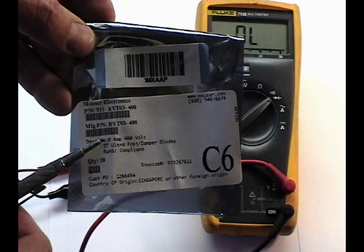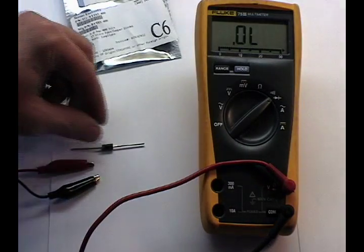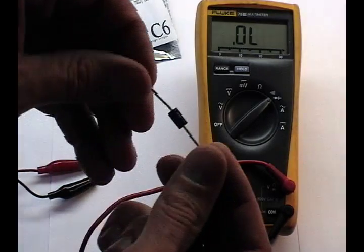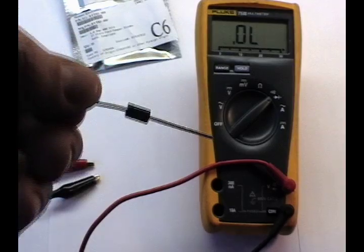All diodes have various specifications. One of those is the forward voltage drop. Observe the location of the band on this diode.